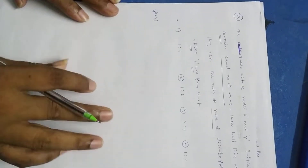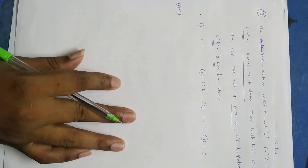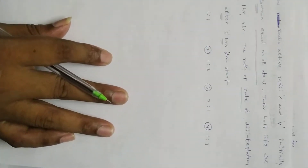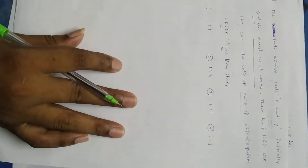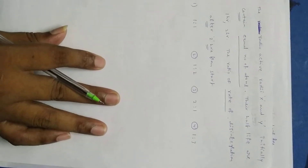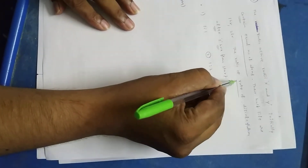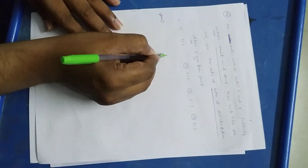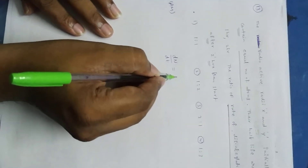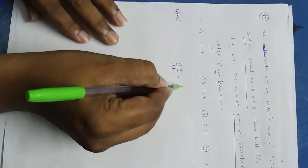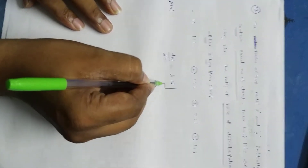Here, next problem number 13. The radioactive nuclei X and Y initially contain equal number of atoms. Half lives are given: 1 hour and 2 hours. Find the ratio of rate of disintegration after 2 hours from start. Rate of disintegration means activity. According to Rutherford-Soddy law, dN by dt equal to lambda into N.